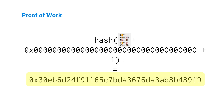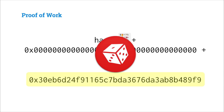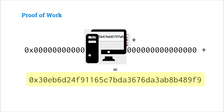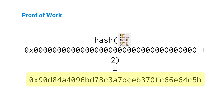We get a new hash like 30EB. If we increment the nonce again to 2 and recompute, we're rolling the dice again and get a new block hash like 90D84. Every time we increment the nonce and recalculate this hash, we get a random 256-bit block hash.